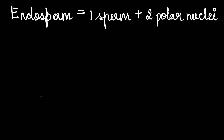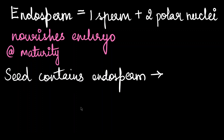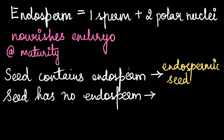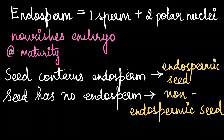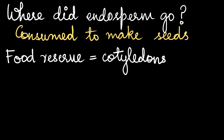Endosperm is formed when one of the sperms fertilizes the polar nuclei during the fertilization process after pollination. The endosperm's main function is to nourish the embryo, but at maturity seeds might or might not contain endosperm. If the seeds contain endosperm at maturity they are called endospermic seeds, and if the seeds have no endosperm they are called non-endospermic seeds. So where does the endosperm go? It is consumed to make cotyledons, as endosperm is nutritious — its nutrition is transferred to the cotyledons as the food reserve.